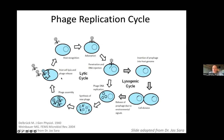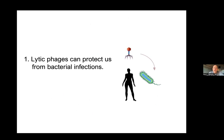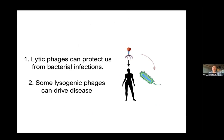Some bacteriophages are only lytic and are purely pathogens or parasites. But lysogenic bacteriophages do other interesting things — they can transmit antibiotic resistance and have very complex relationships with their host bacteria. That becomes important because our story tonight really has two halves. The first is about lytic bacteriophages and how we can use them to potentially protect us from bacterial infections. But on the other hand, some lysogenic phages are out there that can actually drive disease. These are the two stories I'm going to be telling you about this evening.